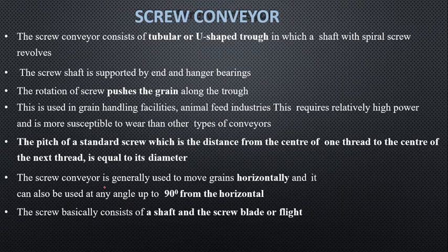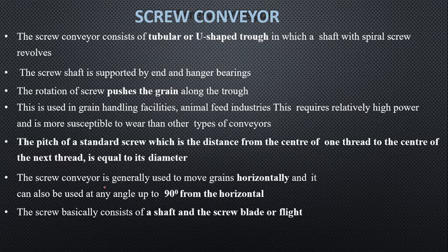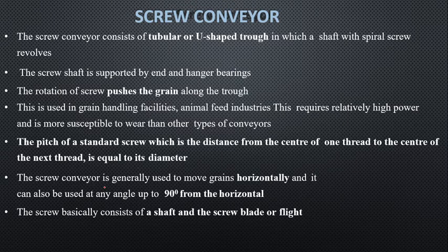The basic parts are the shaft, screw blade, and flight. This mechanism is simpler — no tensioning device is required — and the cost is the lowest among conveyors of comparable length and capacity. The main parts include the screw blade.